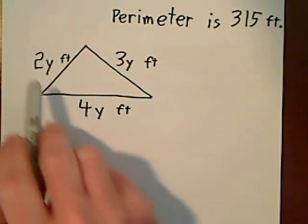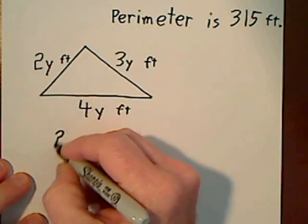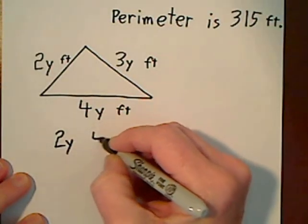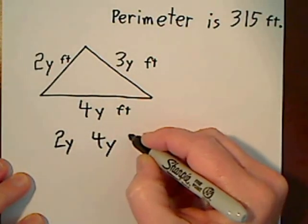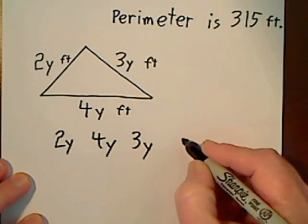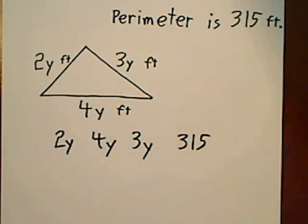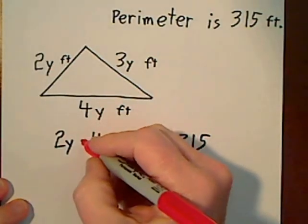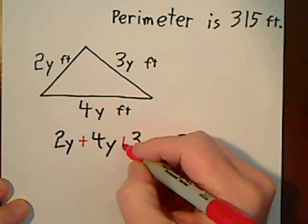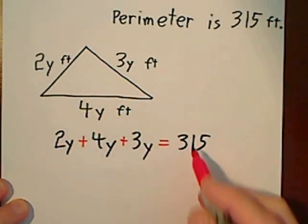We'll add up these three sides and set it equal to 315. So we're going to have 2y plus 4y plus 3y equals 315. If we add up these three sides, that's going to be equal to 315.